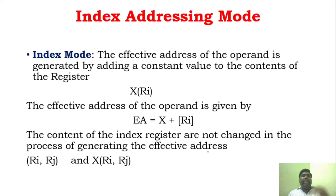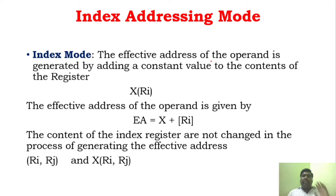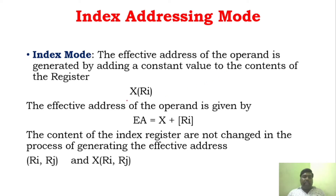Index addressing code. It will not give the direct operand; here it will also use the effective address. But the effective address here needs to be found out in a different way. It will be represented like this: S and RI, where RI is the general purpose register, and this is used as an effective address.